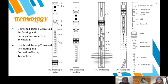There are two technologies here. The first is the combined tubing conveyed perforating and putting into production technology. The technique involves: A) running into the string, B) selective zonal isolation, C) perforating, and D) putting into production. The second technology is combined tubing conveyed perforating and formation testing technology.